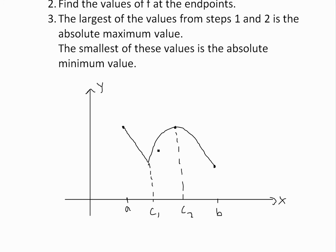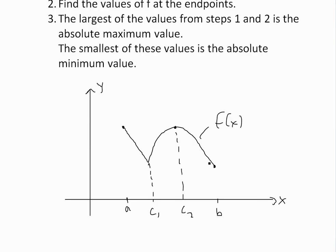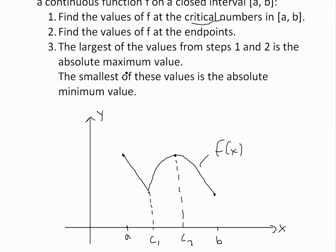For example, over here in between this closed interval, this is a function f(x) with a and b as the interval. These critical points—at c₁, the derivative does not exist, so that's a critical point. At c₂, the derivative equals zero, that's another critical point. Step two says find the values of f at the endpoints, and finally step three